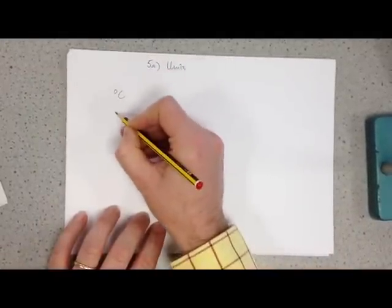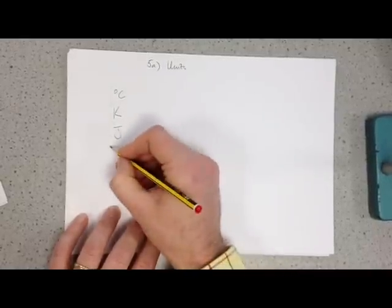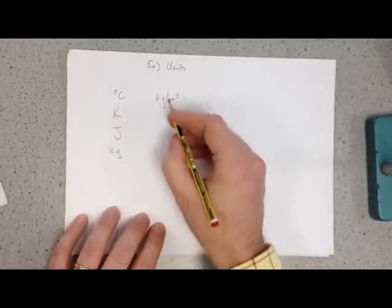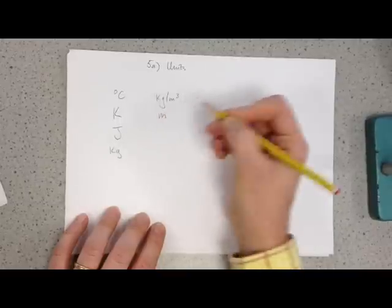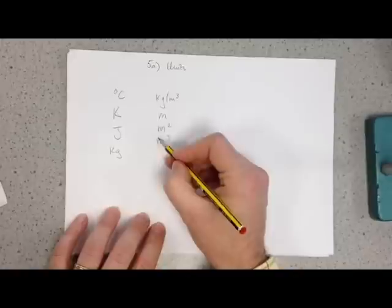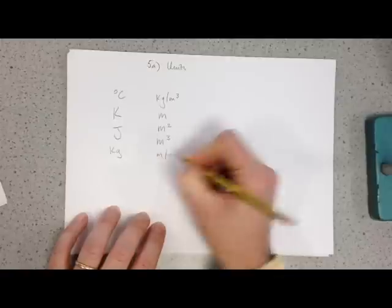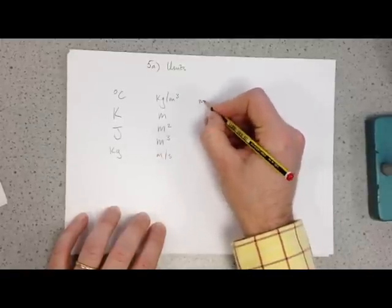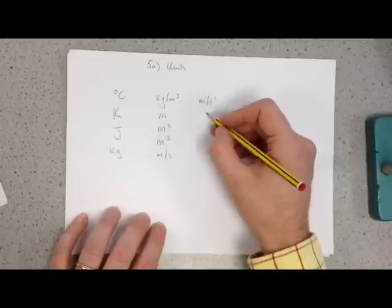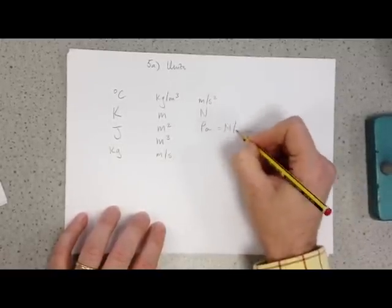Degrees Celsius, that's temperature. Kelvin, that's also temperature, and we know about those now. Joules, energy. Kilograms, obviously mass. Kilograms per cubic metre, that's density, mass divided by volume. Metres, obviously distance. Metres squared, that's area. Metres cubed, that's volume. People often get those two mixed up. Metres squared, definitely always area. Metres cubed, definitely always volume. Metres per second. Metres per second squared, that's acceleration. You might remember from section one of the syllabus. Newtons, that's force. And pascals, that's pressure, which is obviously the same as a newton per square metre, as we said right at the beginning.